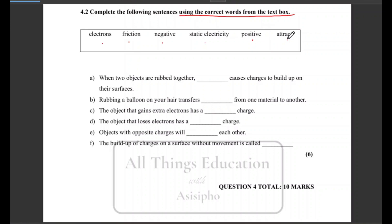So you have electrons, friction, negative, static electricity, positive and attract. Let's look at a) When two objects are rubbed together, friction causes charges to build up on their surfaces. Then b) Rubbing a balloon on your hair transfers electrons from one material to another. c) The object that gains extra electrons has a negative charge. d) The object that loses electrons has a positive charge. e) Objects with opposite charges are going to attract each other.